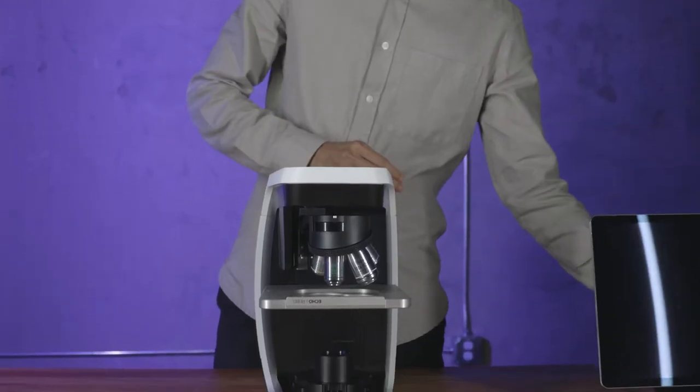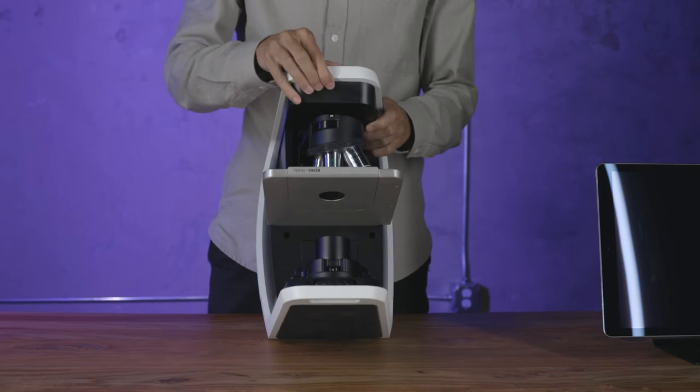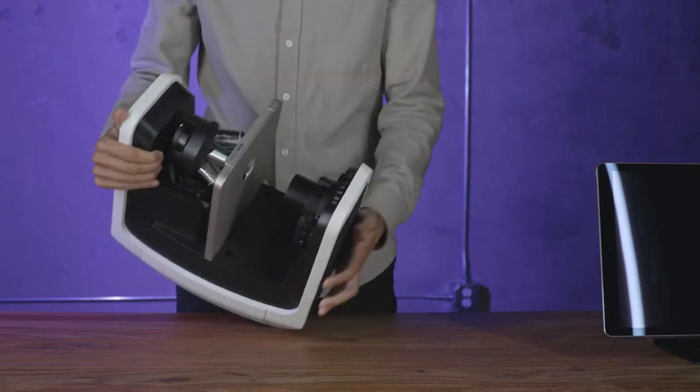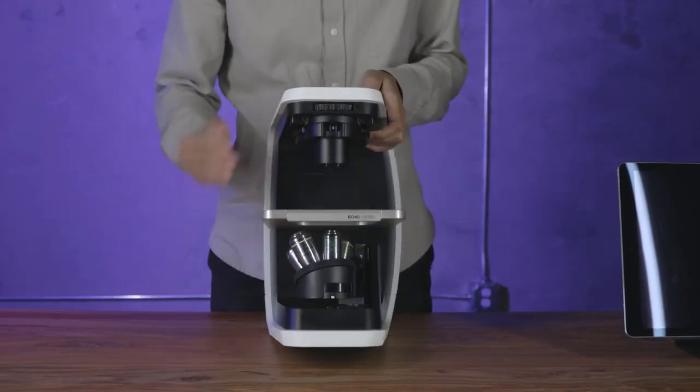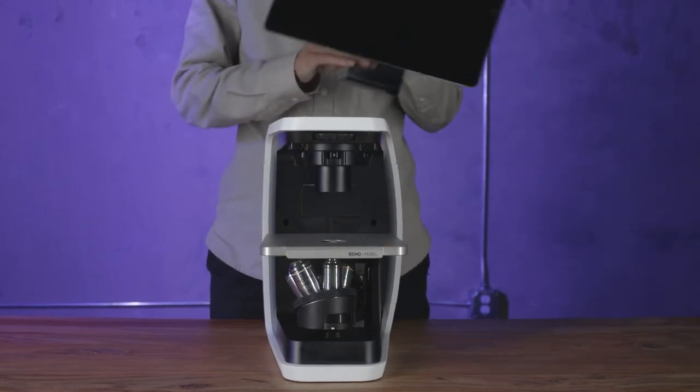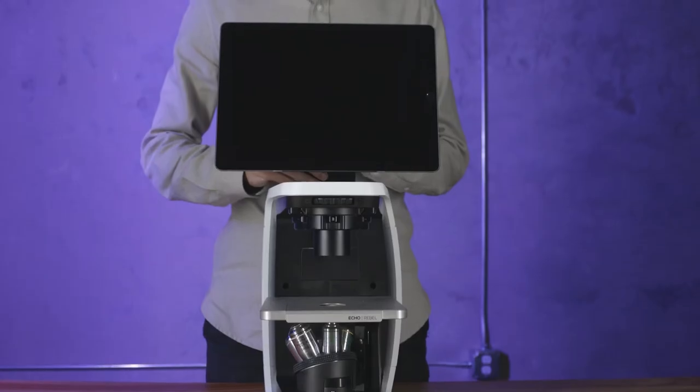To switch modes, simply remove the display, rotate the microscope, place the display back in, and you're ready to go.